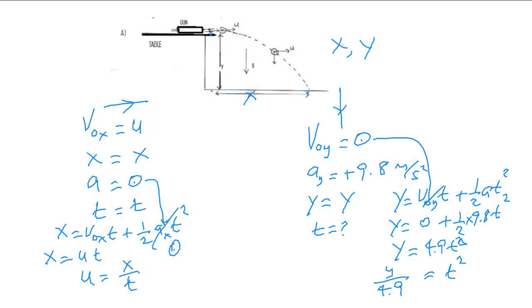T is going to be equal to square root of Y over 4.9. So that's the T. You can take the T and put it for this, so you can take this T and put it for this T here. So what you will see is that U is equal to X divided by T.